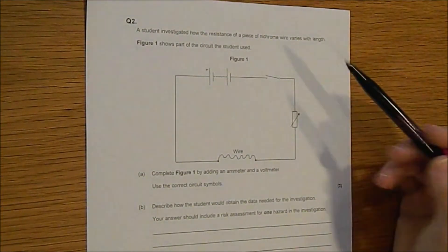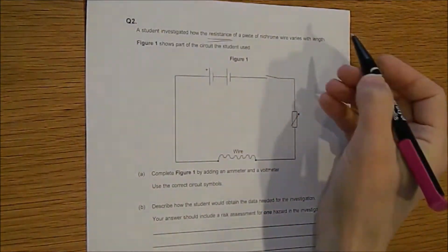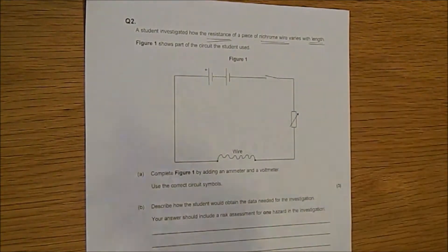Question 2. A student investigated how the resistance of a piece of nichrome wire varies with length. Figure 1 shows part of the circuit the student used.